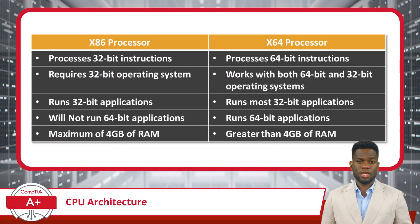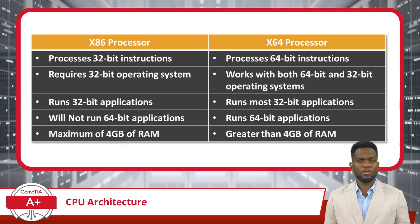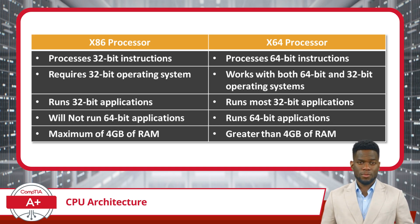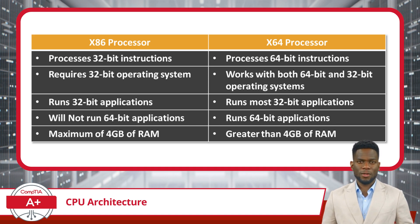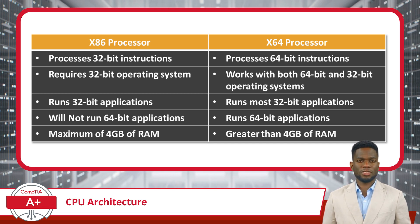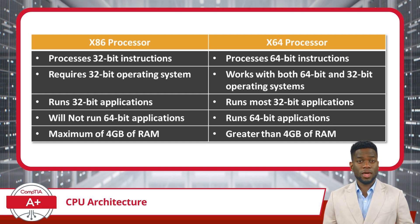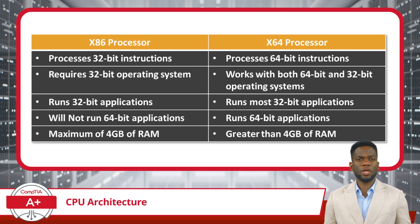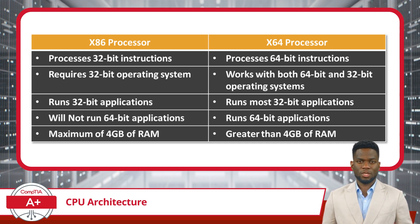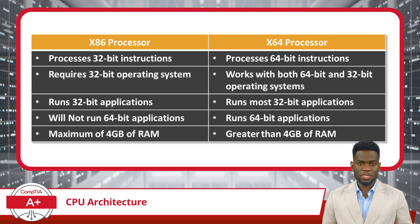The terms X86 and X64 refer to different types of instruction sets used by CPUs. X86, also known as a 32-bit processor, was the predecessor to X64. It laid the groundwork for modern computing but had limitations in terms of overall performance. Despite its shortcomings, the X86 architecture was the standard for a considerable period, powering countless computers and devices around the world. X64, on the other hand, is a 64-bit architecture that has become very common in today's computers, offering significant improvements in overall performance compared to the older X86 architecture.